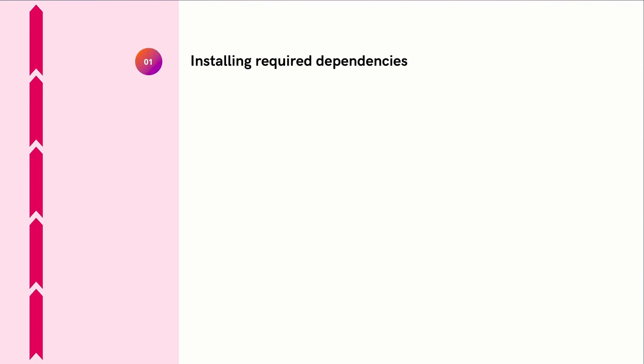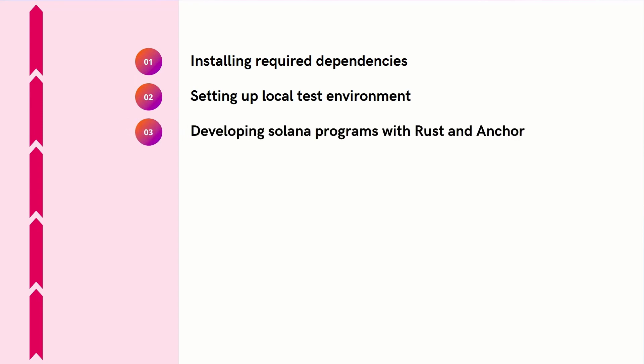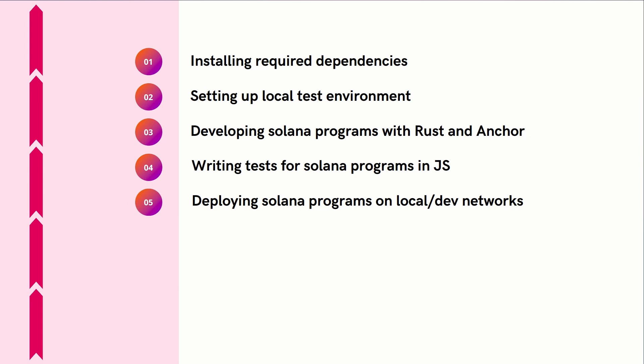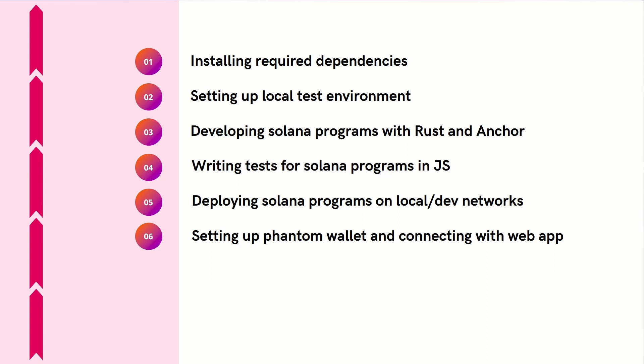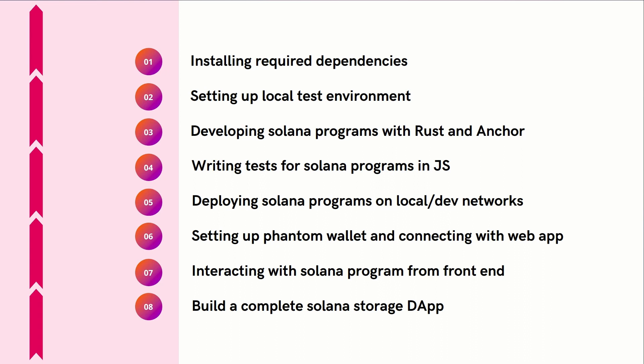The topics discussed in this course are: first, we will see how to install the required dependencies; then setting up a local test environment for Solana development; then developing Solana programs with Rust and Anchor; then we will see how to write tests for Solana programs in JavaScript; then we will deploy Solana programs on both local and devnet; then we will set up the Phantom wallet and connect it with the application; and after that, we will see how to interact with a Solana program from a front-end application. At the end, we will build a simple storage Solana program where anyone can store and retrieve a value in the Solana program.